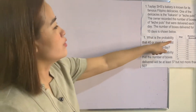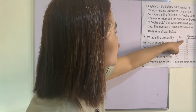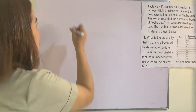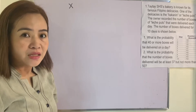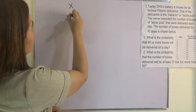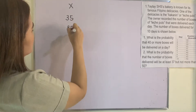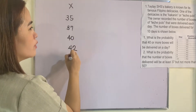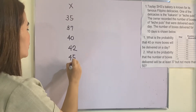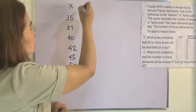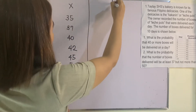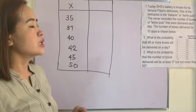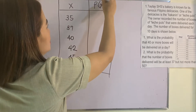We have day 1 to day 10 with the corresponding number of boxes. Our random variable X is the number of boxes delivered each day. We have the values 35, 37, 40, 42, 45, and 50. The first step is to create a two-column table: the first column is the random variable X, and the second column is P(X), the probability of the random variable.